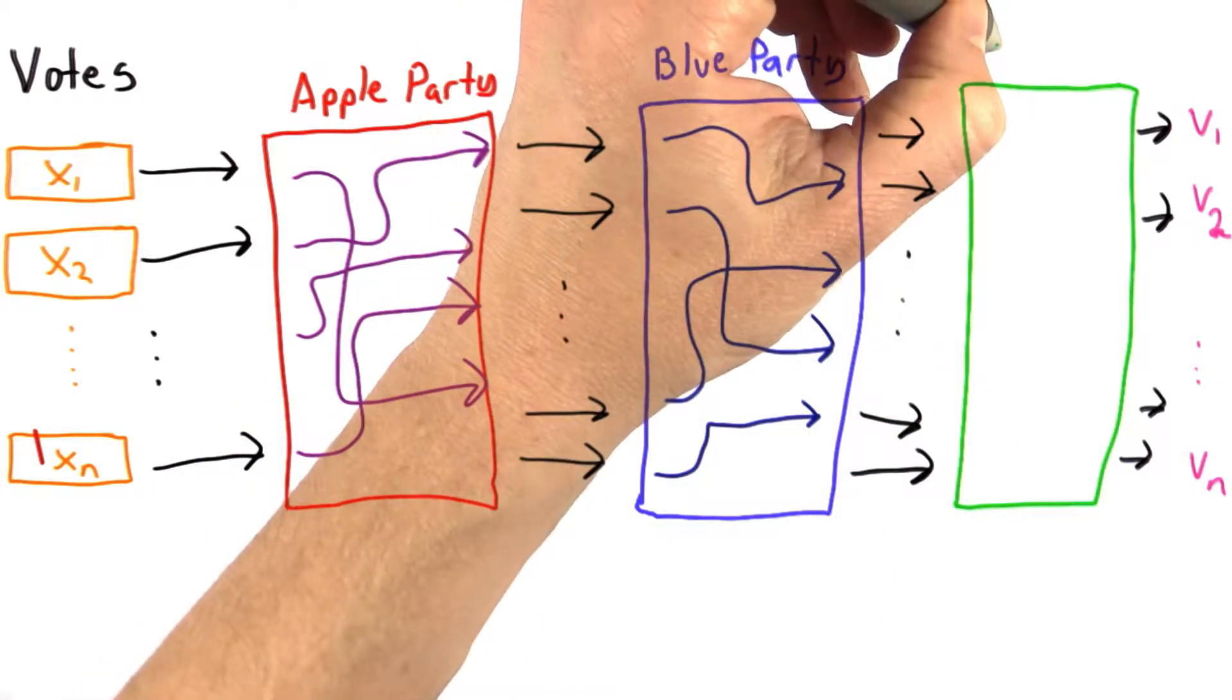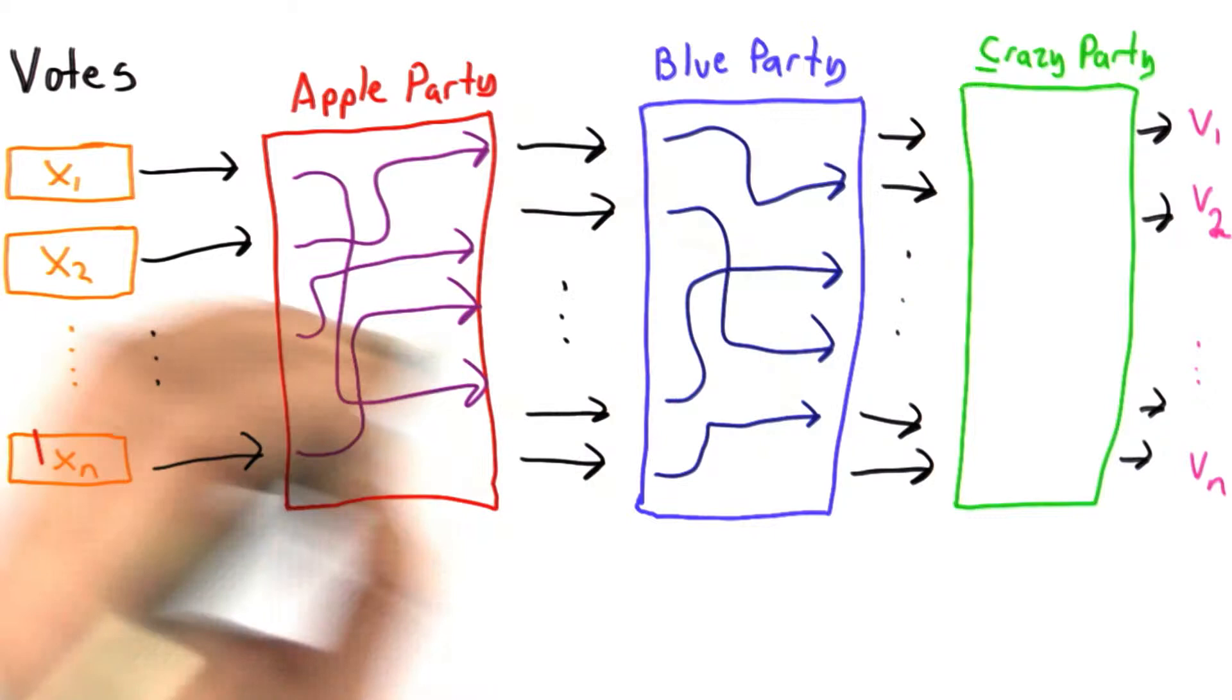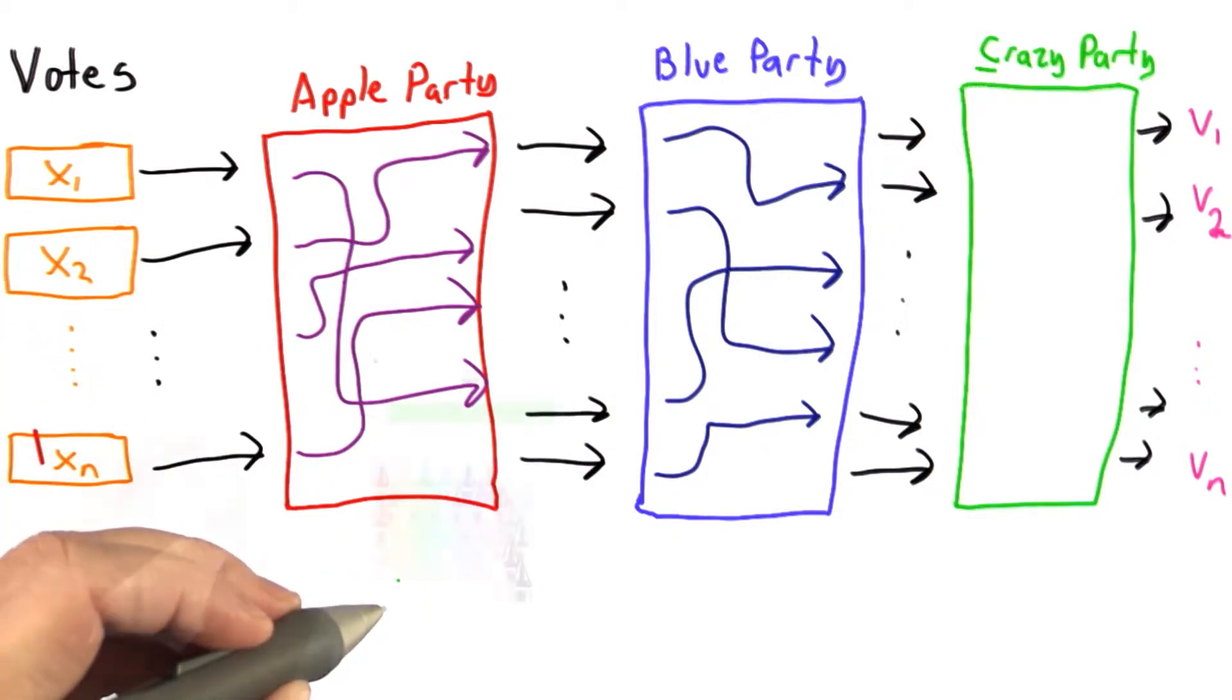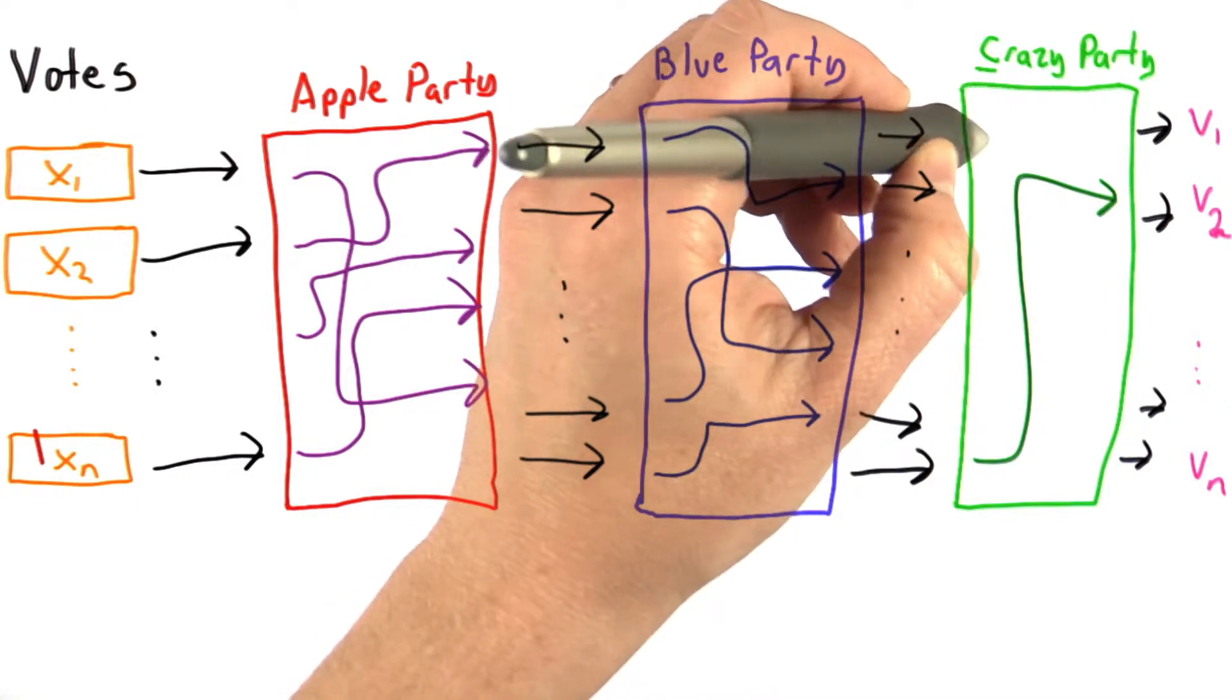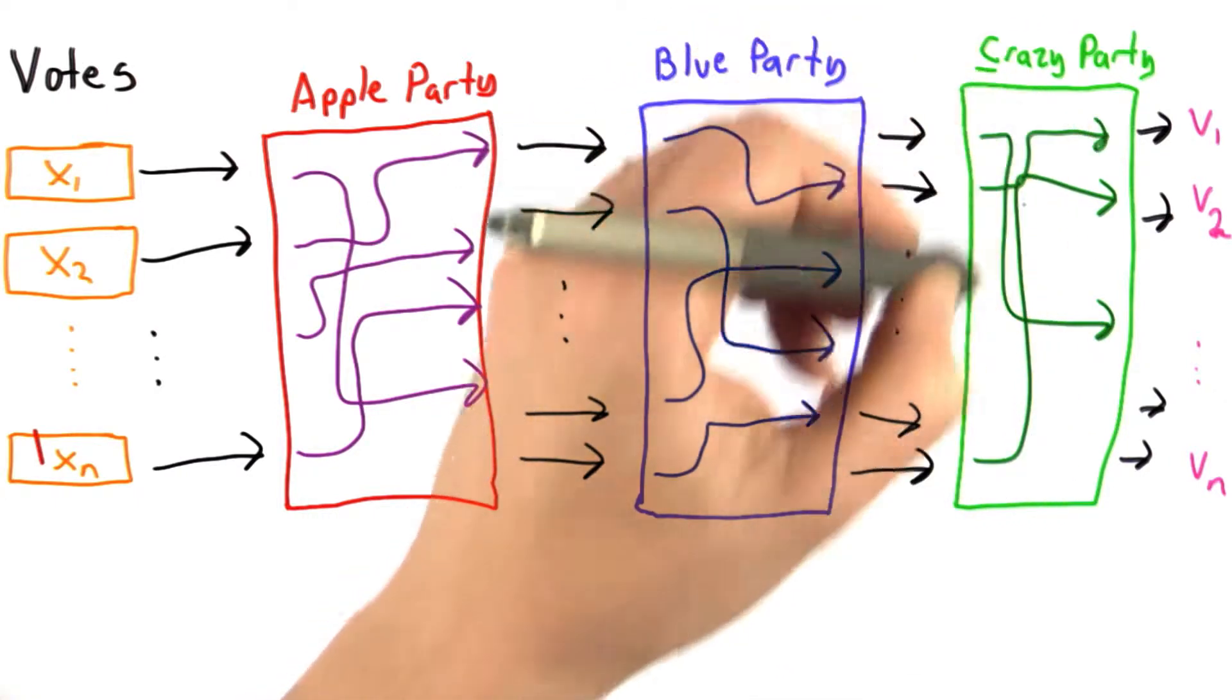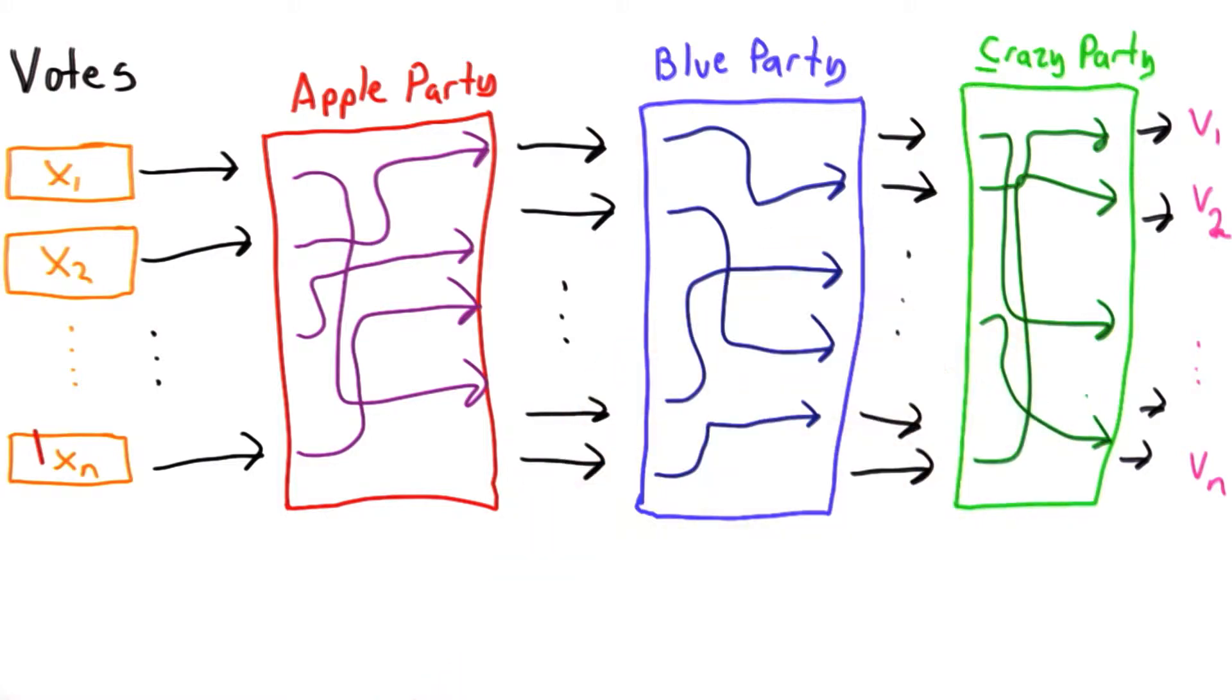And then those are passed along to the next one, and we'll call this one the crazy party. So our parties start with the letters A, B, and C. And the crazy party does the same thing. It selects some random permutation and scrambles the positions of the votes.